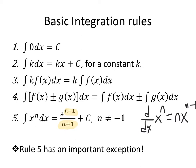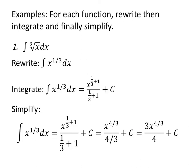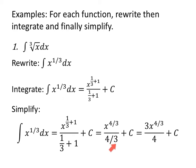Now let's find some anti-derivatives. For each function we'll rewrite it, integrate, then simplify. For the integral of the cube root of x dx: rewrite the cube root of x as x to the one-third. Applying the power rule, add 1 to the exponent and divide by the new exponent — don't forget plus C at every step. One-third plus one is four-thirds, both in the exponent and denominator. Dividing by four-thirds equals multiplying by three-fourths, giving us three-fourths x to the four-thirds plus C.